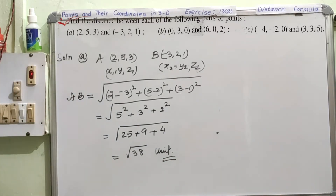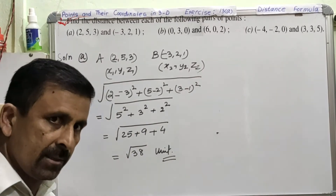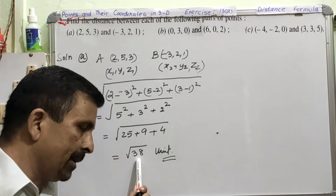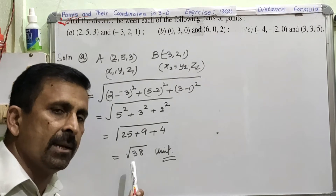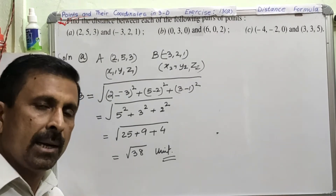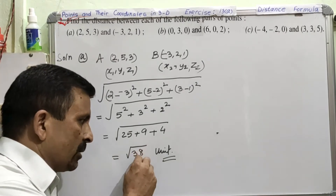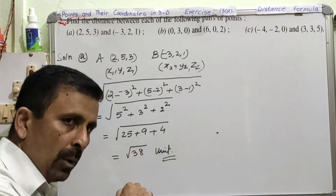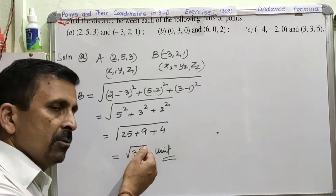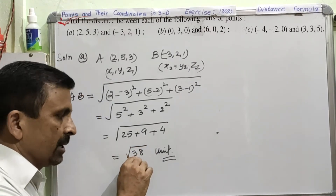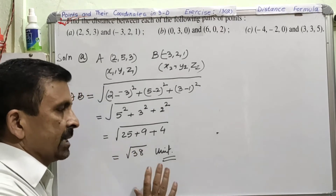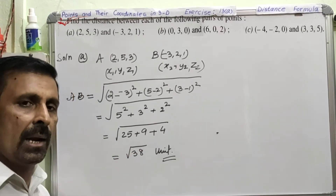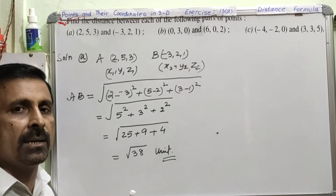As I mentioned earlier, the number inside the root sign is called the radicand. If the radicand is a perfect square number, we simplify one more step to get the final reduced answer. But because 38 is not a perfect square, √38 remains the answer. With these two questions, you should now clearly understand how to find the distance between two points in the 3D plane.